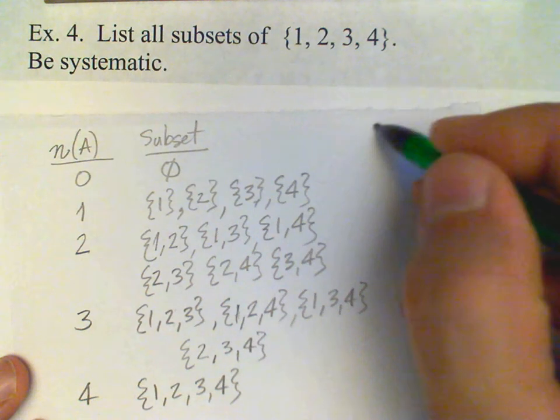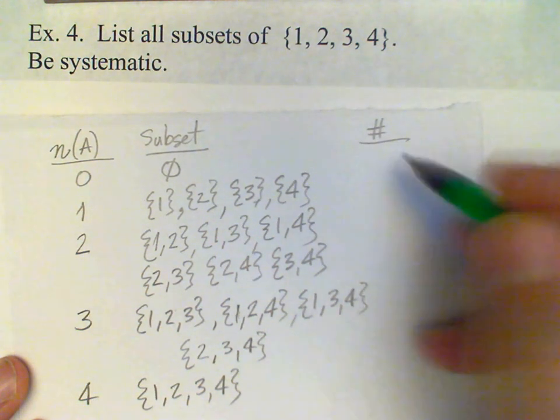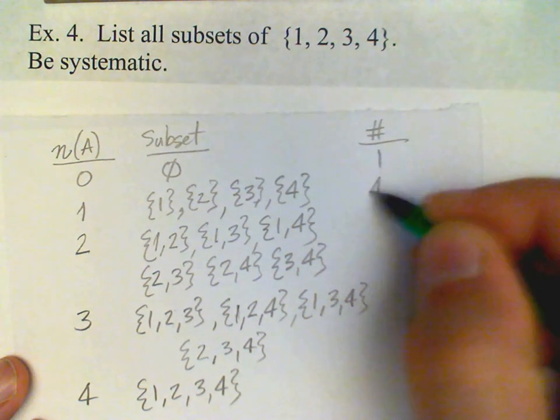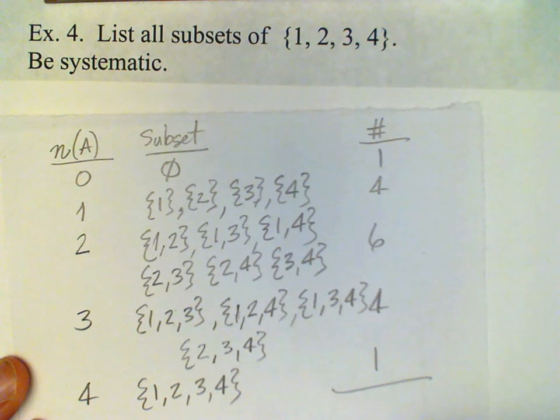Okay, so the number for each cardinal number of the subsets: 1, 4, 6, 4, 1. The total is 16.